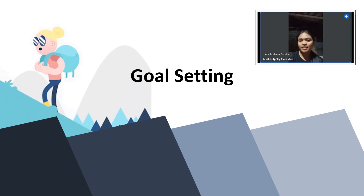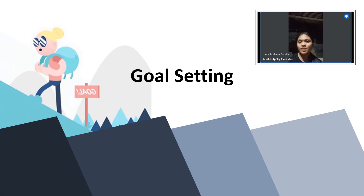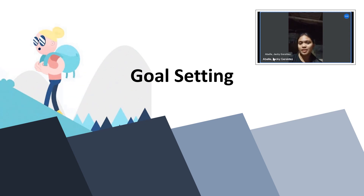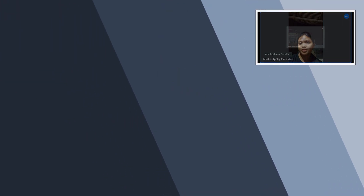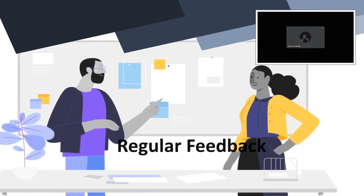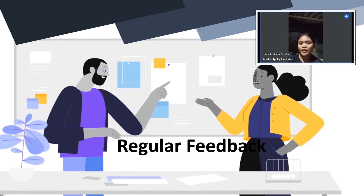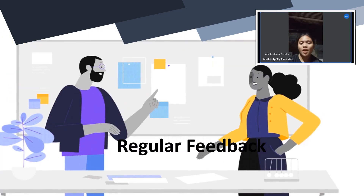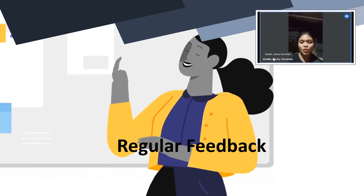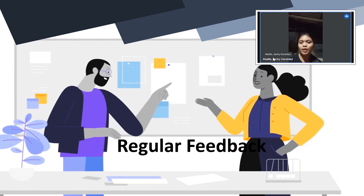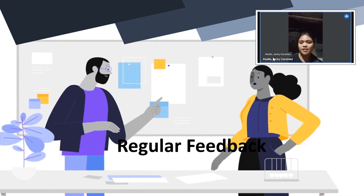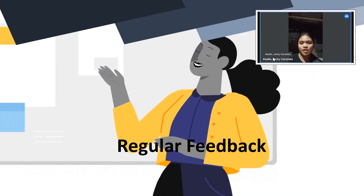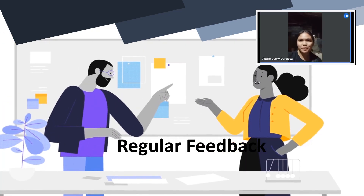Goal setting involves establishing clear objectives and performance standards that employees are expected to meet. Regular feedback means providing ongoing feedback and coaching throughout the performance period to help employees understand how they are meeting expectations.